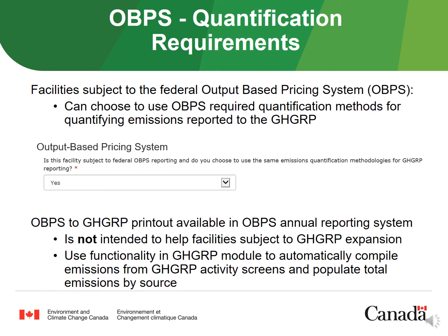In the OBPS reporting system, there is a function that will generate an OBPS to GHGRP printout based on the emissions you are reporting in the annual OBPS report. This is not intended for facilities subject to expanded GHGRP requirements. In the GHGRP report, after reporting the detailed information for each applicable activity, there is a function that automatically populates the total emissions categories based on the previous emissions information provided. Therefore, there is no need to use the printout.